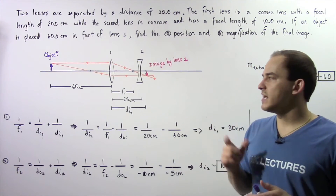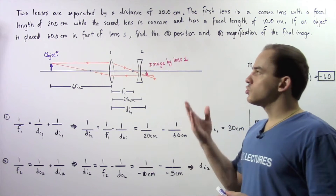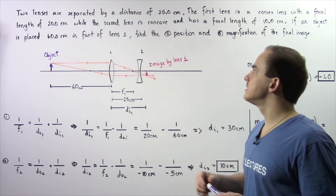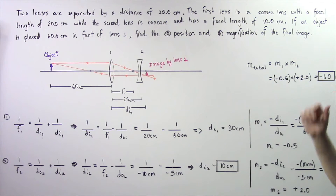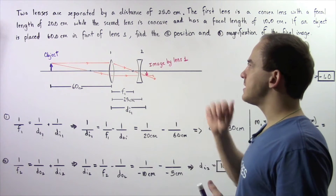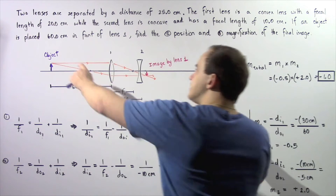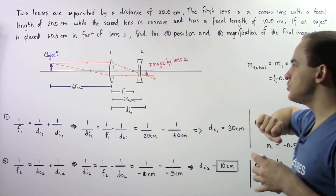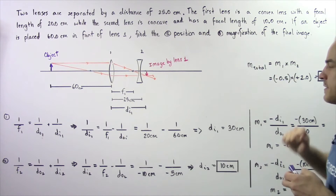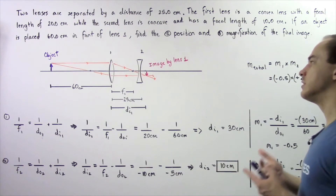Let's examine the following example that deals with combining a convex and a concave thin lens. Two thin lenses are separated by a distance of 25 centimeters. The first lens is a convex lens with a focal length of 20 centimeters, while the second lens is a concave lens with a focal length of 10 centimeters. If an object is placed 60 centimeters in front of lens one, find: A) the position of the final image, and B) the magnification of the final image formed by this system of two thin lenses.